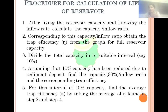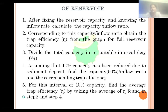Initially it is 100 TMC capacity. To find how many years it takes to reach 20 TMC capacity, we take intervals of 10 percent. Assuming 10 percent capacity has been reduced due to sediment deposition, calculate the capacity inflow ratio for 90 percent and the corresponding trap efficiency. For each interval of 10 percent capacity — 100 TMC to 90 TMC, 90 TMC to 80 TMC — we calculate the trap efficiency for each interval.